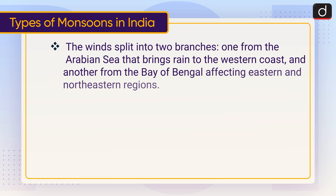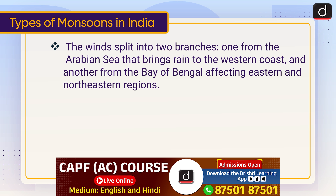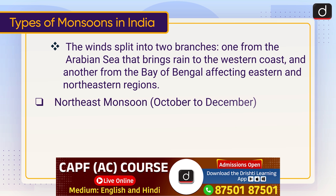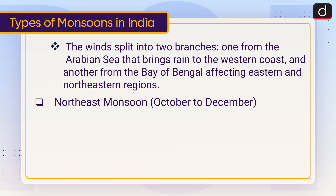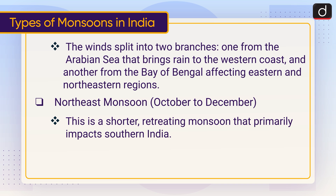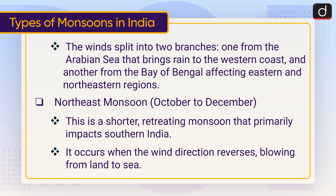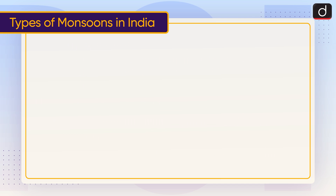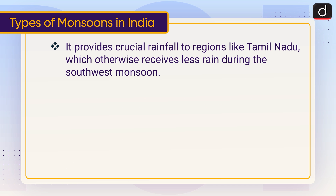The winds split into two branches — one from the Arabian Sea that brings rain to the western coast, and another from the Bay of Bengal affecting eastern and northeastern regions. The Northeast monsoon, from October to December, is a shorter, retreating monsoon that primarily impacts southern India. It occurs when the wind direction reverses, blowing from land to sea. It provides crucial rainfall to regions like Tamil Nadu, which otherwise receives less rain during the southwest monsoon.